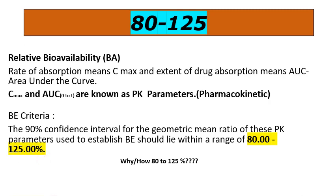Previously we discussed that the variation or range was 20% from the reference values. So if the reference is considered 100%, the test product limits would become 80 to 120. But the actual BE limit is 80 to 125.